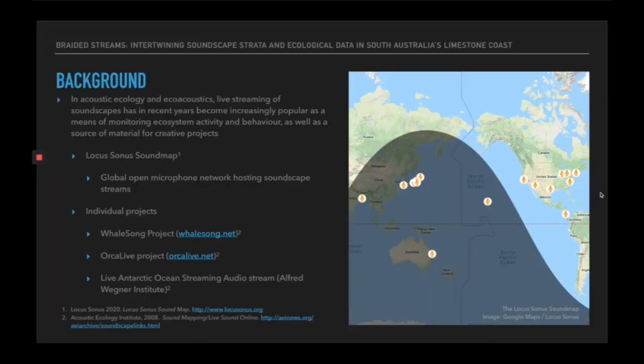In acoustic ecology and eco-acoustics, live streaming of soundscapes has in recent years become an increasingly popular means of monitoring ecosystem activity and behaviour, as well as a source of material for creative projects. Perhaps most notable amongst these efforts is the Locus Sonus Soundmap, which is a global open microphone network hosting soundscape streams around the world.